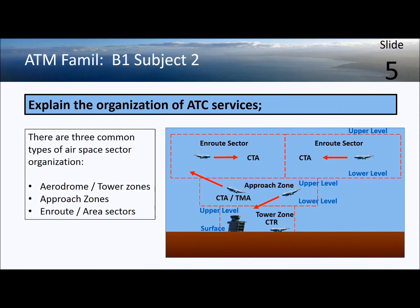This explains the organization of ATC services. We have a diagram showing three types. At an airport controlled by a control tower, we have a zone that extends several miles out from the runway and from the surface to an upper level. Then typically we have an approach departure zone.